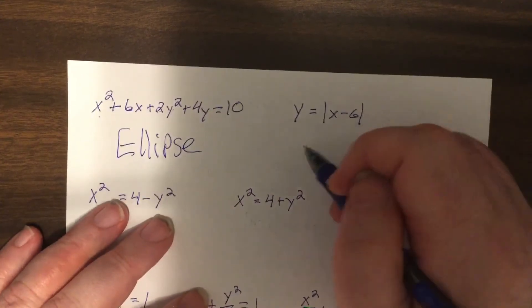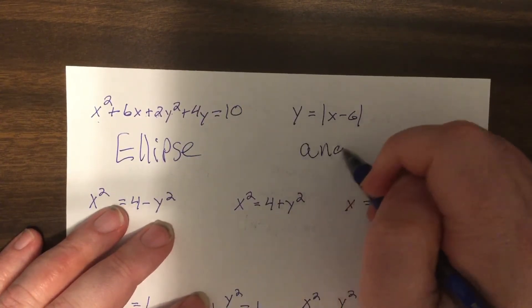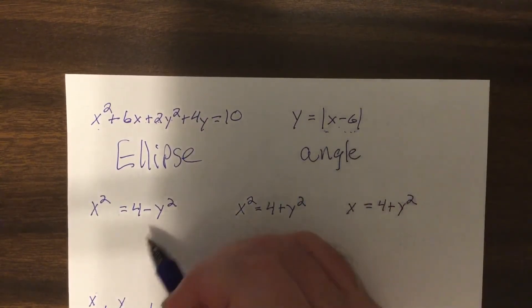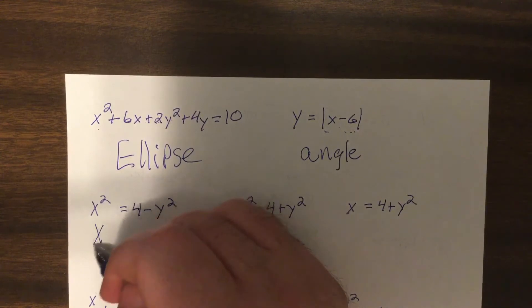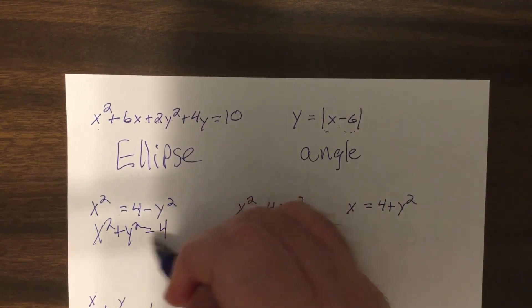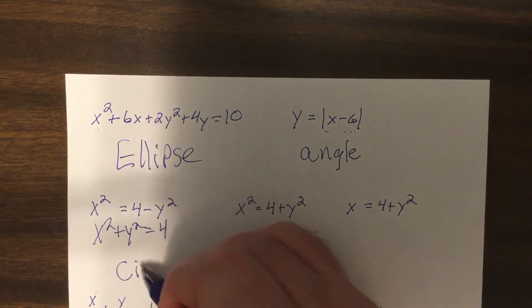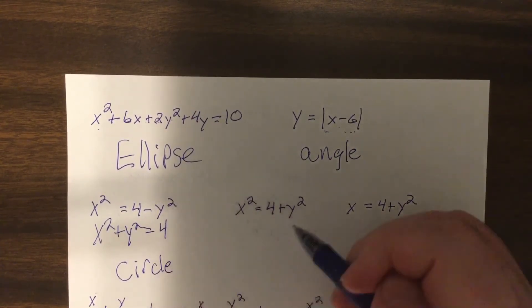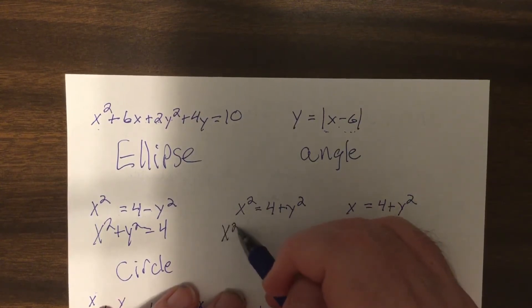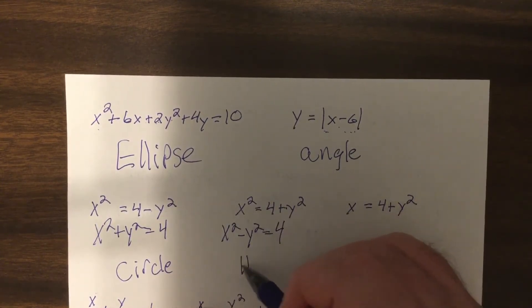Here we have a V-shaped graph or an angle, either way you want to do it, absolute value. Here, when I add the square to both sides, it's a sum of squares, same denominator, circle. Here, I get them to the same side, I subtract the y squared, so it's a hyperbola.